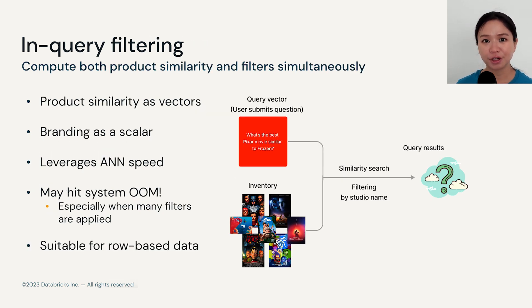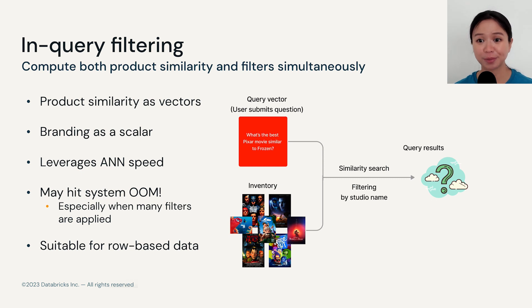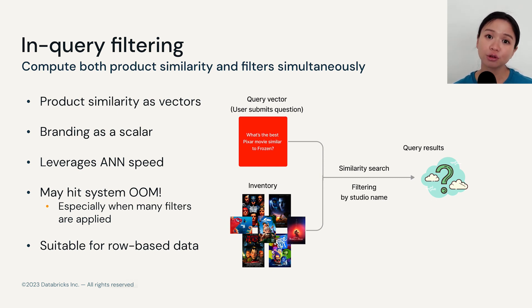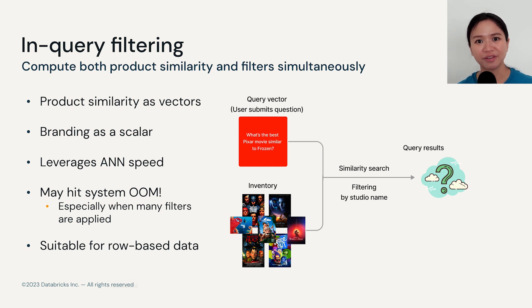The second type of filtering is in-query. This is quite interesting because the algorithm does both ANN and filtering at the same time. For instance, when you search for a movie similar to Frozen but produced by Pixar, all the movie data would have to be converted into vectors. But in the meantime, the studio information is also stored in the system as a scalar field. So during search, both vector similarity and metadata information would need to be computed.